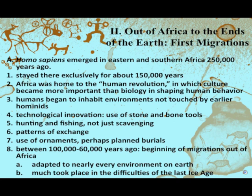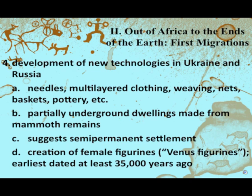People adapted to nearly every type of environment, even taking on difficult areas during the last Ice Age. In Ukraine and Russia, development of new technologies emerged: needles, multi-layered clothing, weaving, nets, baskets, and pottery. We sometimes think of these as products of civilization, but hunting and gathering societies already had baskets, nets, and pottery for their needs. Multi-layered clothing was used in colder northern regions. They had the concept of sewing and weaving — making clothing, blankets, and tents.